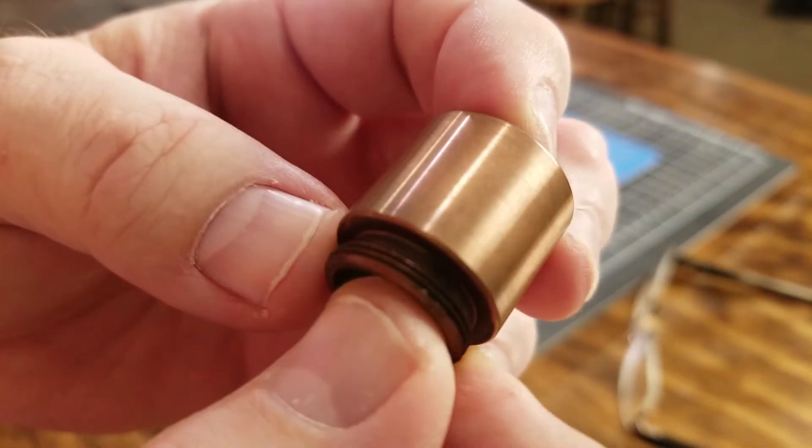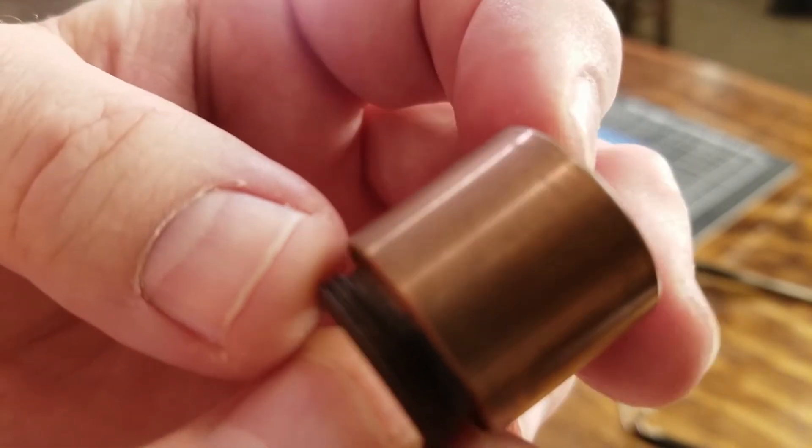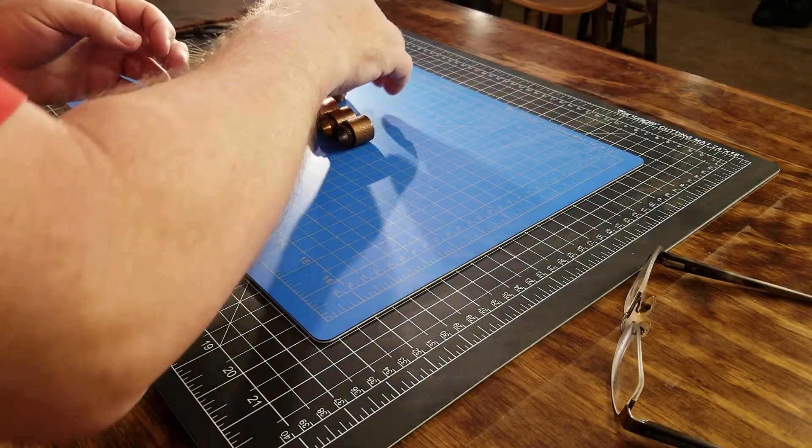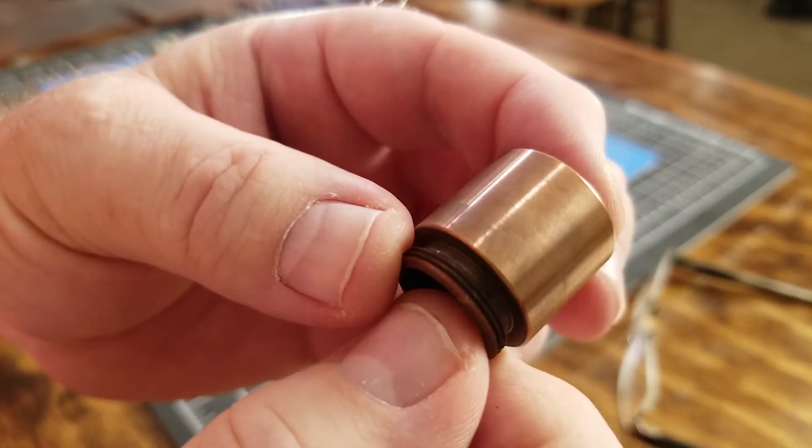A patinaed copper gives it a golden kind of look to it. This one is a little darker, but roughly the same.